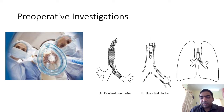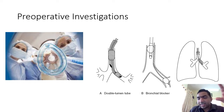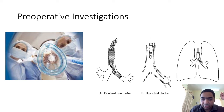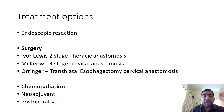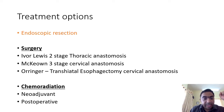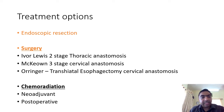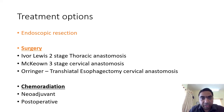Once staging is complete we proceed to treatment. The anesthetist has an important role in esophageal surgery. Treatment options are: endoscopic mucosal resection for early lesions, surgical resection — which can be Ivor Lewis, McKeown, or Orringer (transhiatal) — and chemoradiation, which can be neoadjuvant or postoperative.